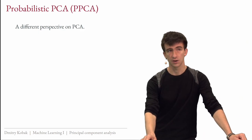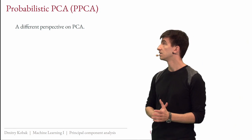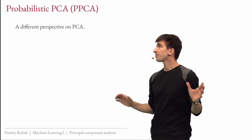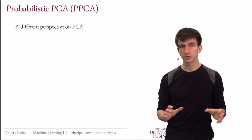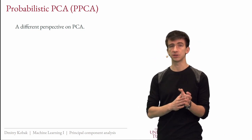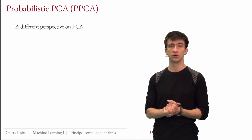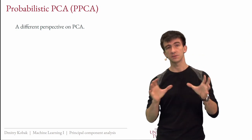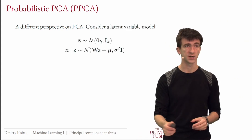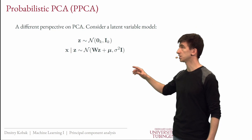The last topic I want to cover briefly is probabilistic PCA — another perspective on PCA. It's a useful perspective related to many topics in more advanced statistics and machine learning. I'll introduce the problem, and at first it won't seem related to PCA, but it will become clear.